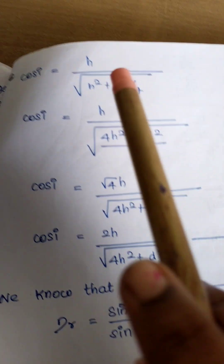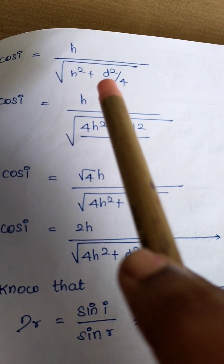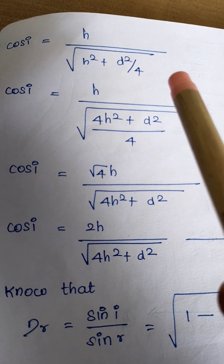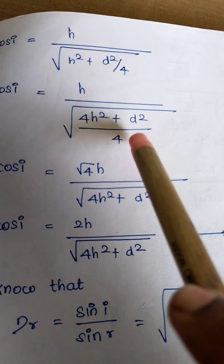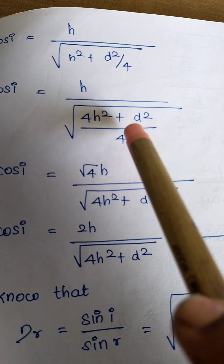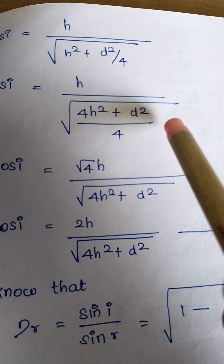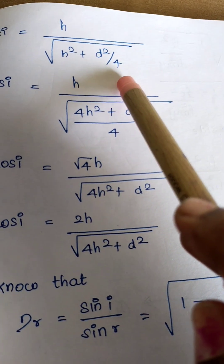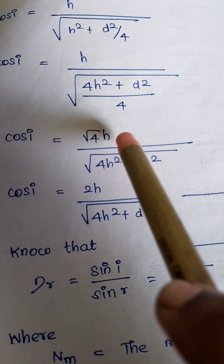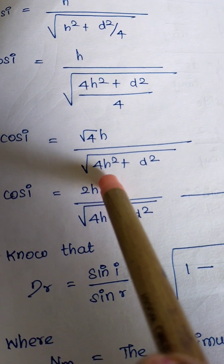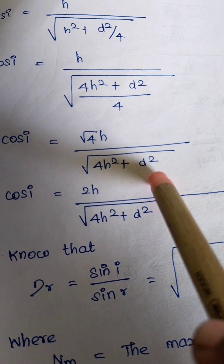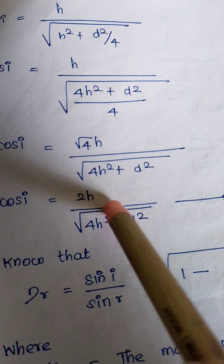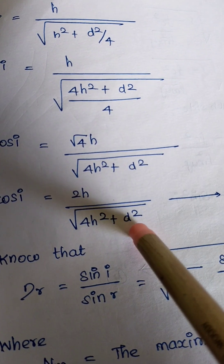For cos(i) = H divided by square root of H squared plus D squared over 4, taking the LCM for the denominator gives square root of (4H squared plus D squared) over 4. Bringing the square root of 4 to the numerator, cos(i) = square root of 4 times H divided by square root of (4H squared plus D squared), which simplifies to cos(i) = 2H divided by square root of (4H squared plus D squared).